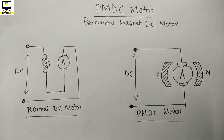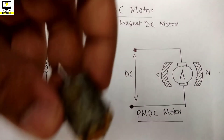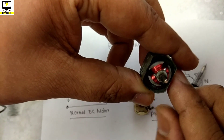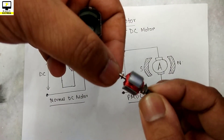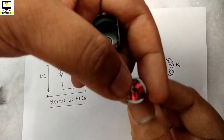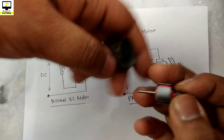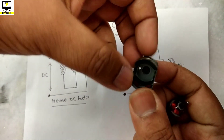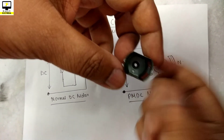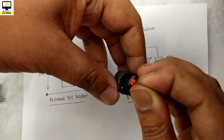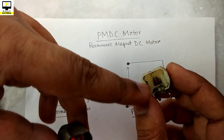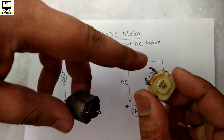Let us check the PMDC motor construction by looking inside a real PMDC motor. This is the PMDC motor which operates on 6 volt DC. Inside the motor, the main part is the armature coil — the armature is constructed by steel core laminations and copper windings for the coil. As you can see, inside a PMDC motor there are two permanent magnets used: one is the south pole and another is the north pole, and the armature is inserted between them. Here are the carbon brushes, and we apply the potential difference across these two terminals.